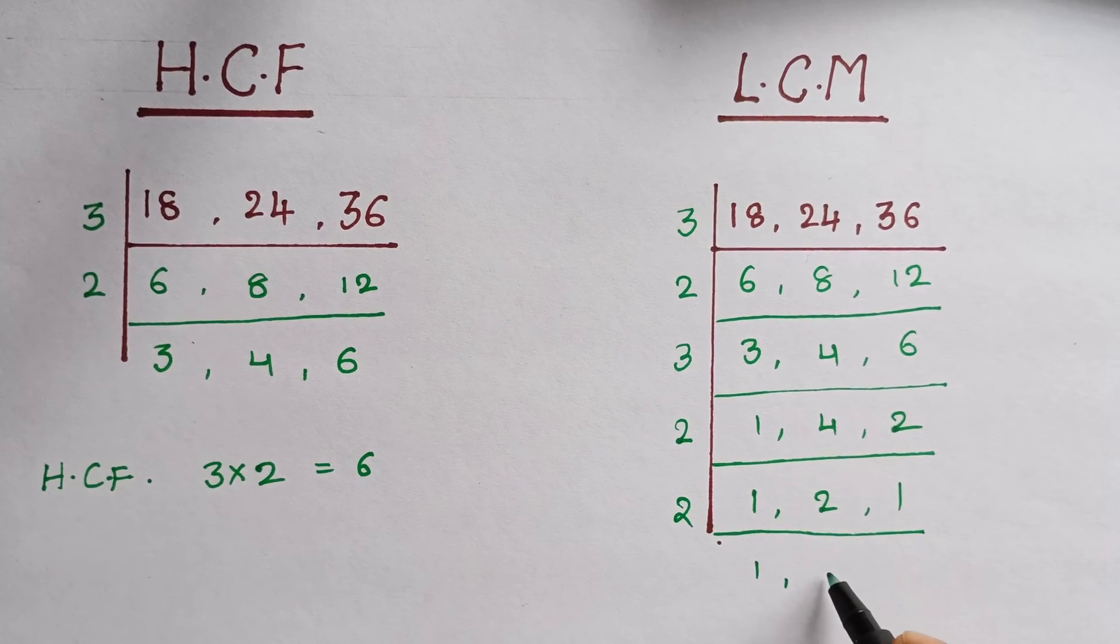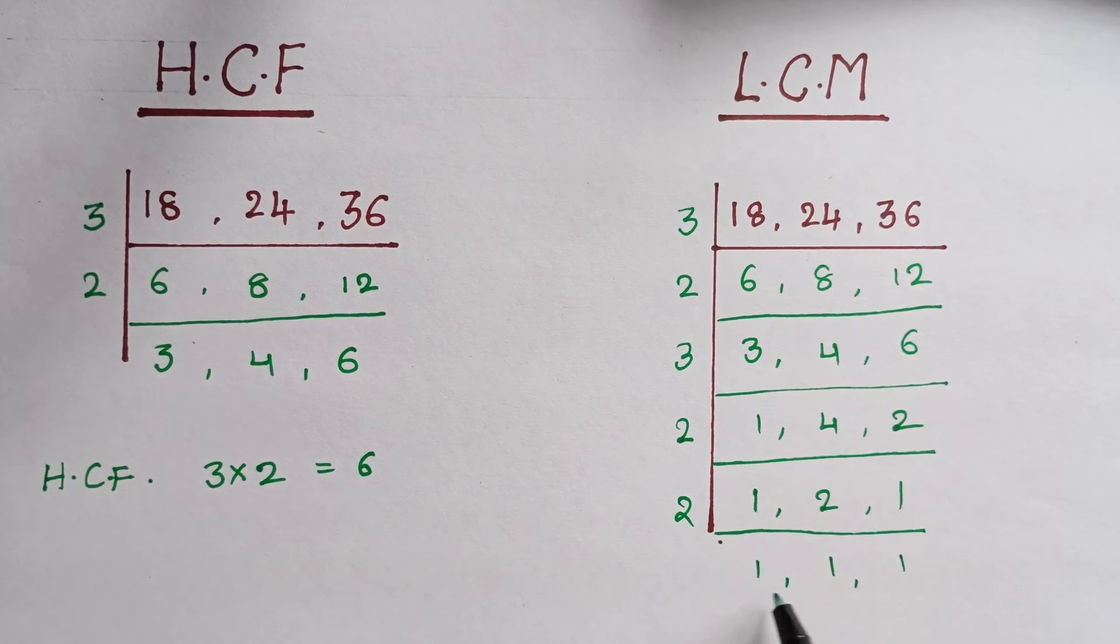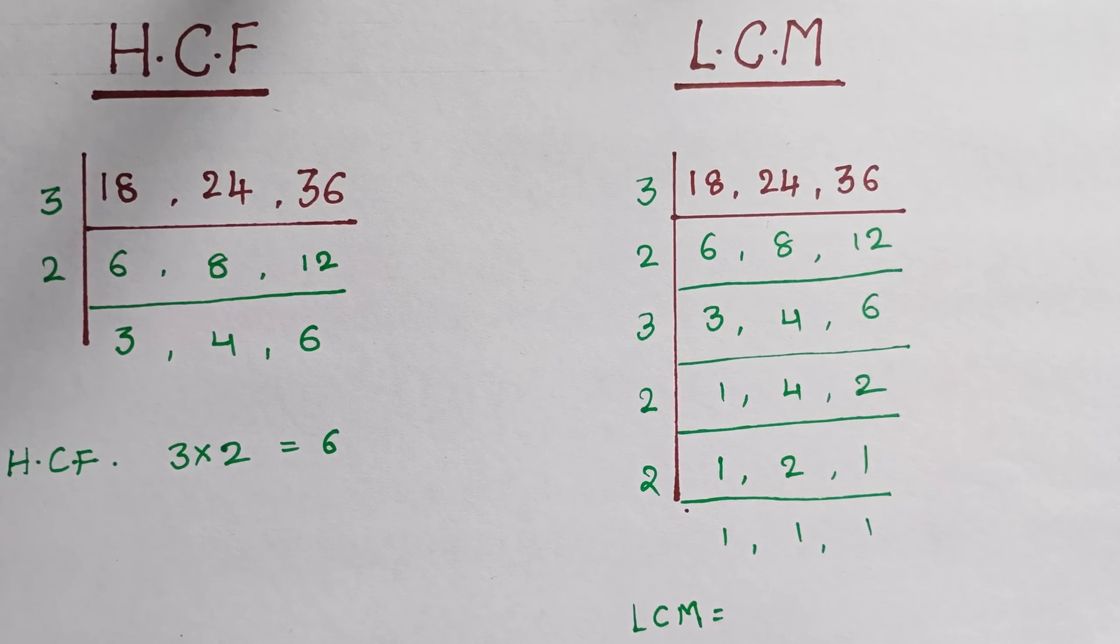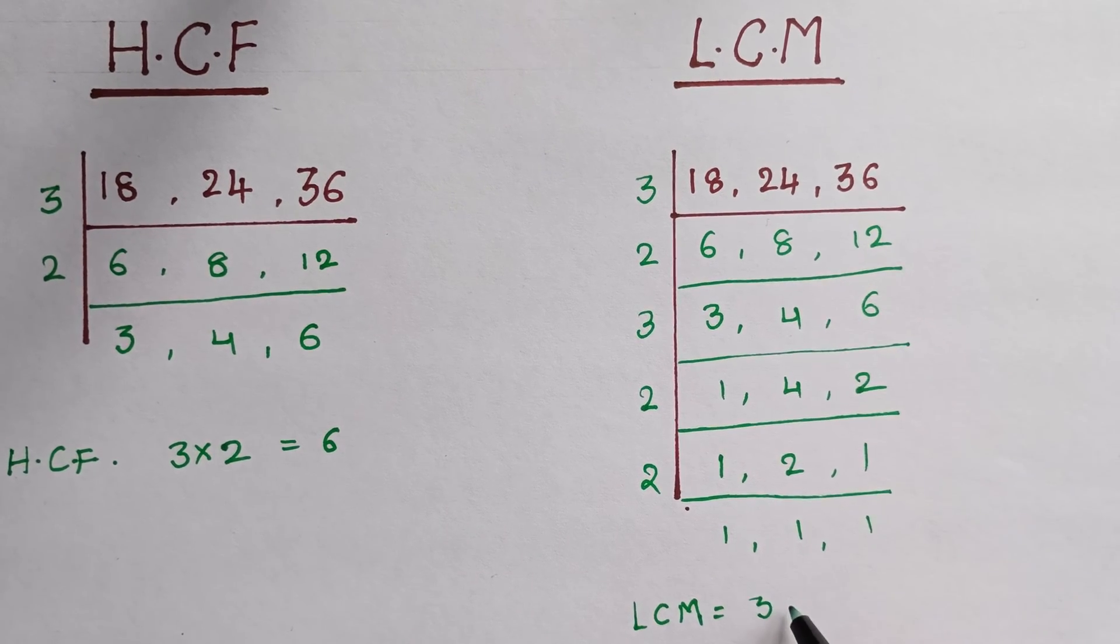Until we get 1, now we can multiply all the factors for LCM. So now all the factors we can multiply: 3, next is 2, 3, 2, and 2.